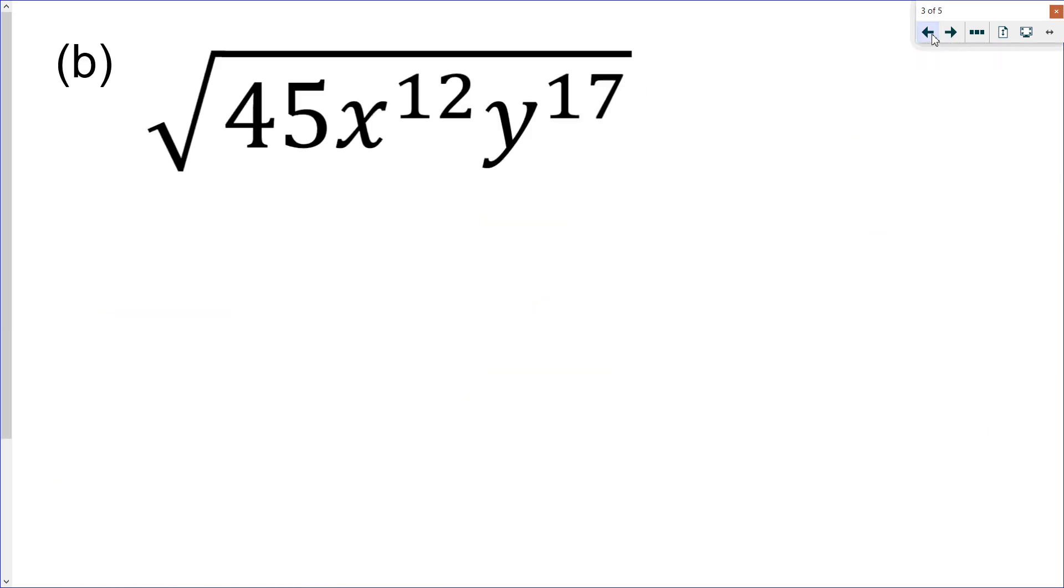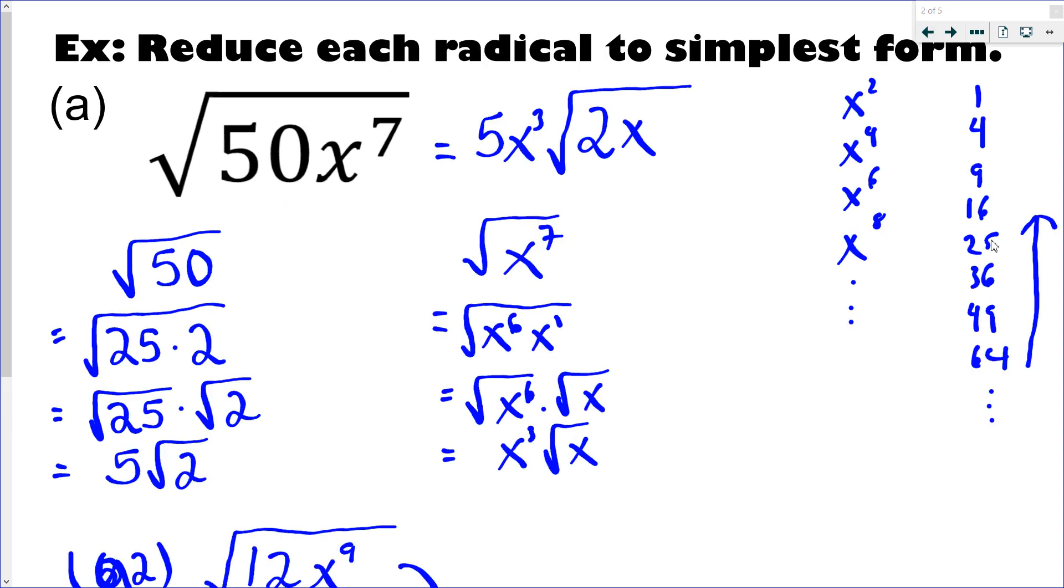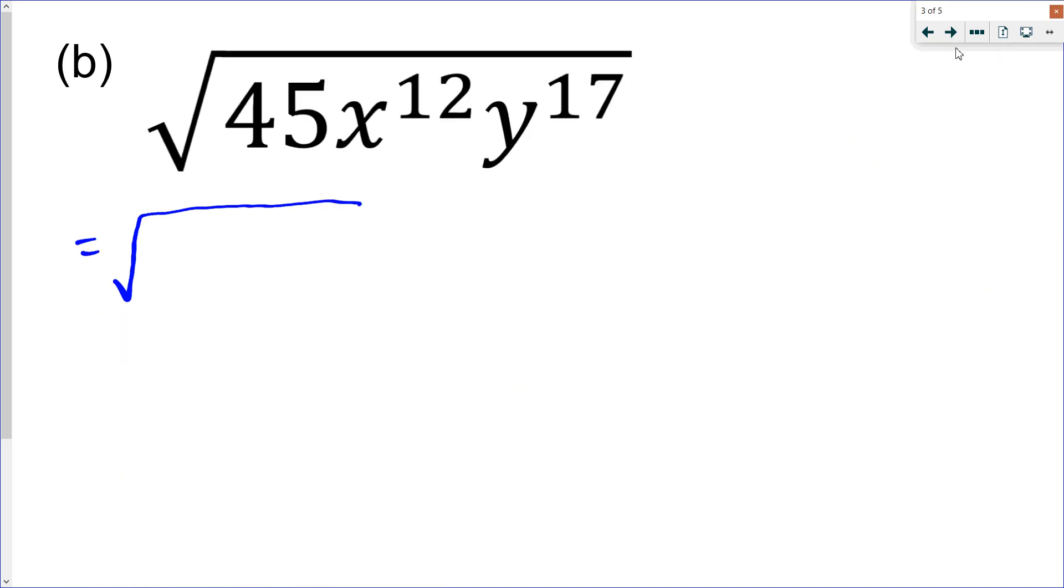All right, let's try another one. So this one's going to have two variables in it. And again, that doesn't change anything. We've still got the exact same process. We've got to deal with each thing individually. So I've got to deal with the 45, I've got to deal with the x^12, and then I've got to deal with the y^17. Three individual processes happening. So 45, again, on that list of numbers, we've got to go down through. So 45 doesn't work with any of these until I get to 9. And literally, I'd be putting in my calculator if I didn't know. So 9 is the first one that works. And 45 is 9 times 5. So number on the list, number not on the list.